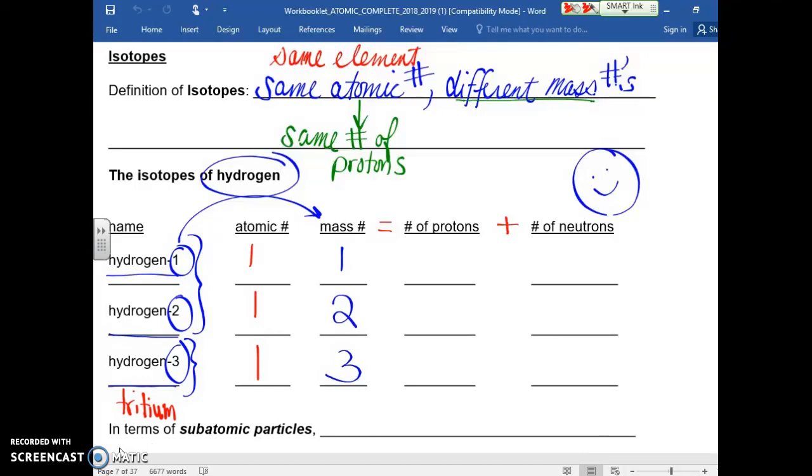So, if I have an atomic number of 1, well, in each case, I have 1 proton, 1 proton, 1 proton.